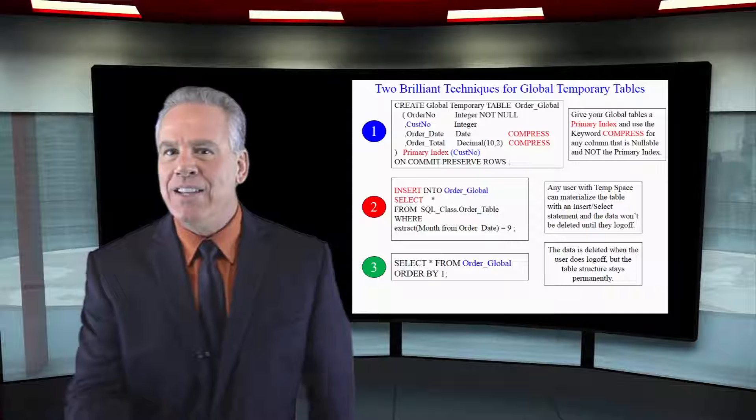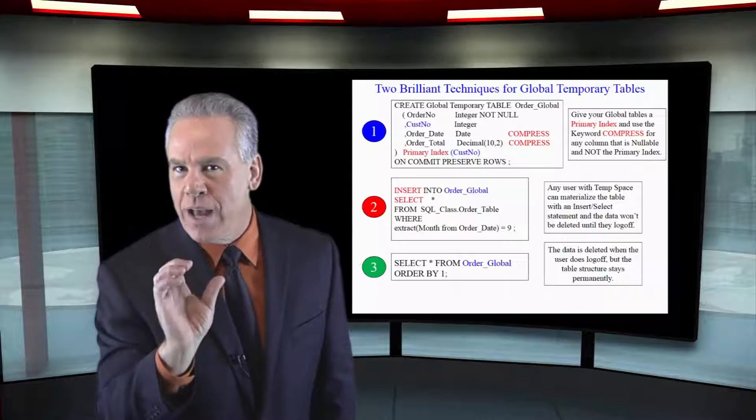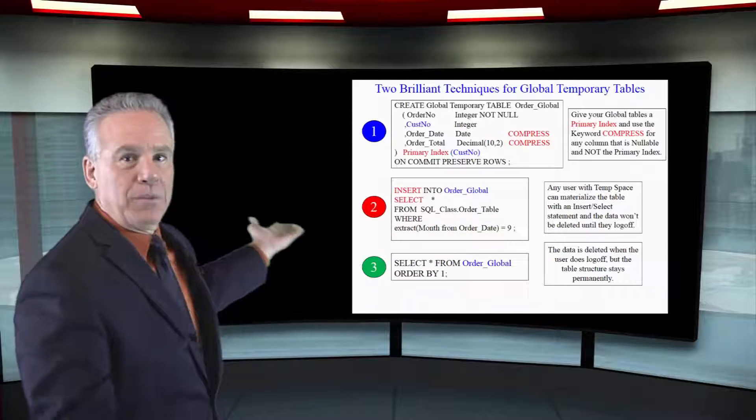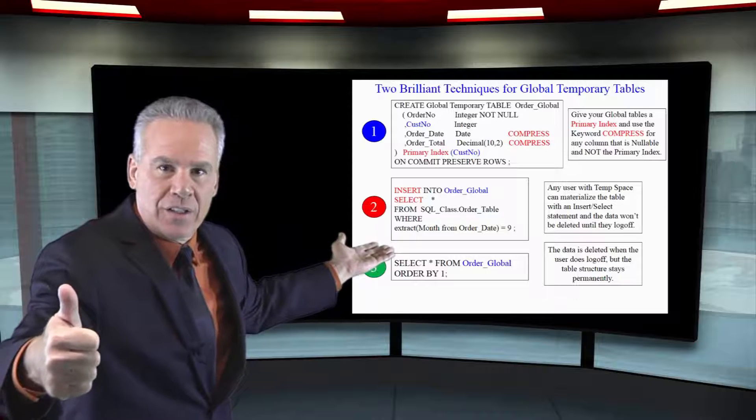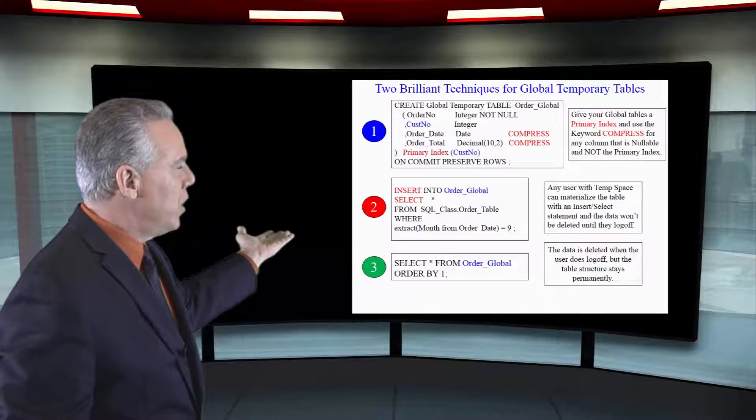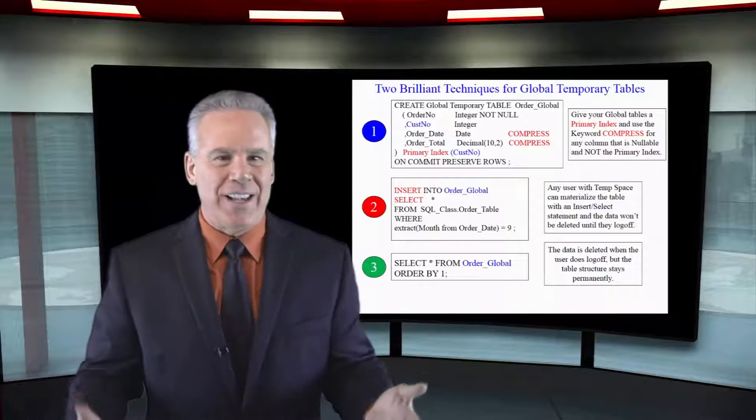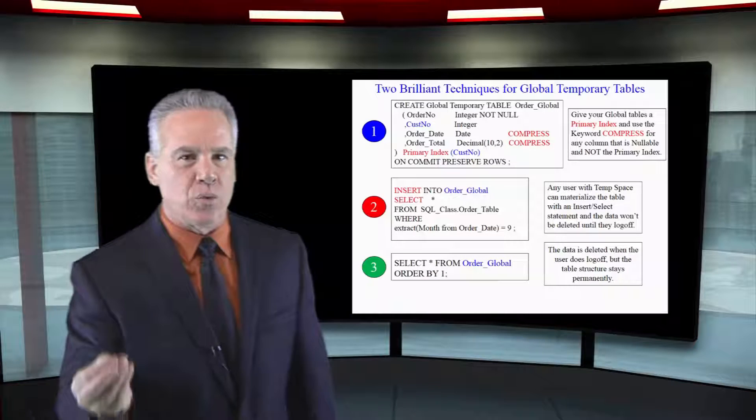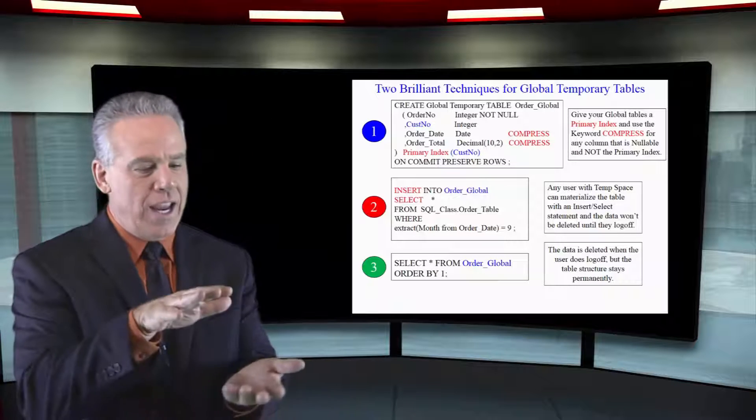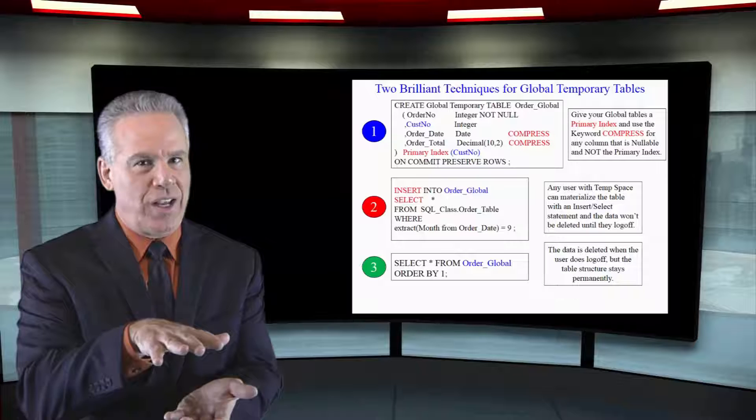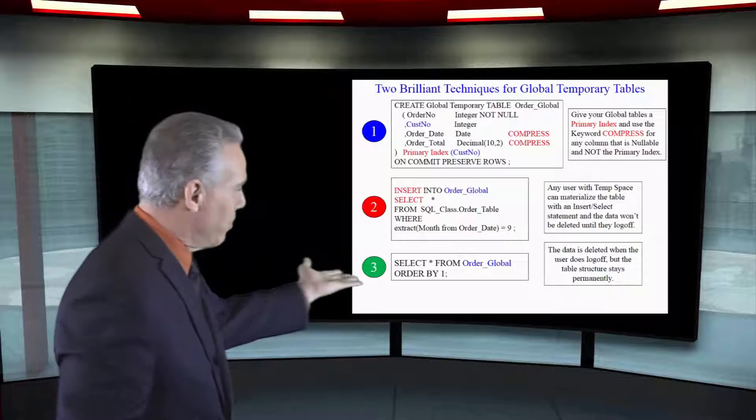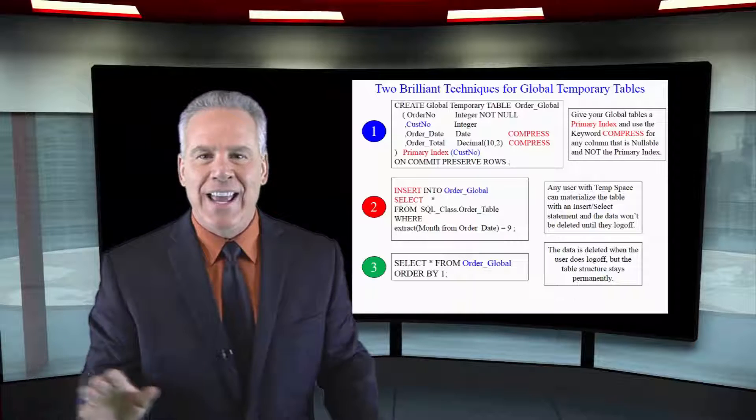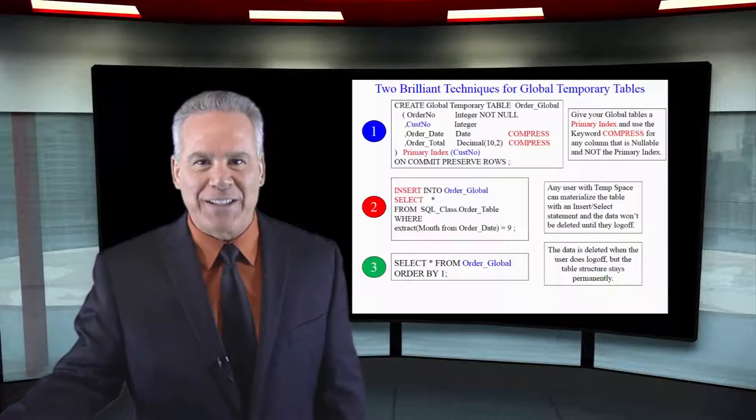The second thing I can do is I can use the word compress on any of the columns except for the primary index. And I wouldn't want to do it on any column that already says not null. If there's any null values in the column that says compress, it'll compress it and save you all of that space.